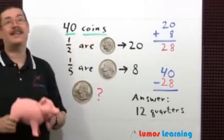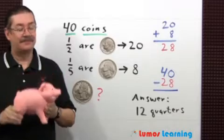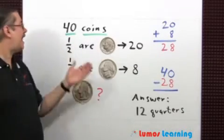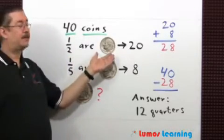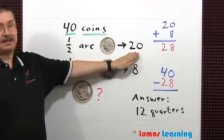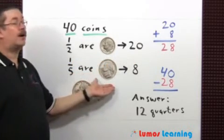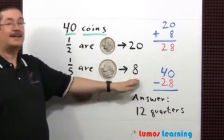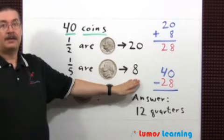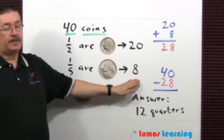Sue has 40 coins in her piggy bank. We know that half of the coins are dimes. Therefore, there are 20 dimes. One fifth are nickels, so she has 8 nickels. We want to know how many quarters she has in her piggy bank.